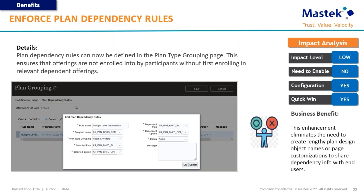The next feature is enforce plan dependency rules. We can now configure plan dependency rules in the plan type grouping page, ensuring that offerings are not enrolled into participants without first enrolling in relevant dependent offerings. Previously, for scenarios like allowing enrollment in Plan B only if enrolled in Plan A, we used a post-election formula that validated on submit. Now you can create these rules directly in the plan type grouping page — it is much easier, and you get the validation prompt after making elections in the plan and clicking save, before the user can proceed.